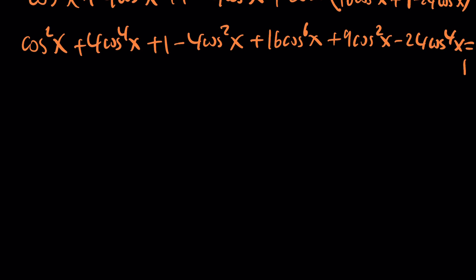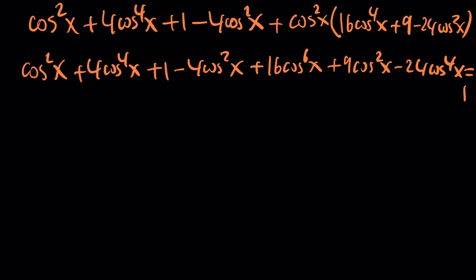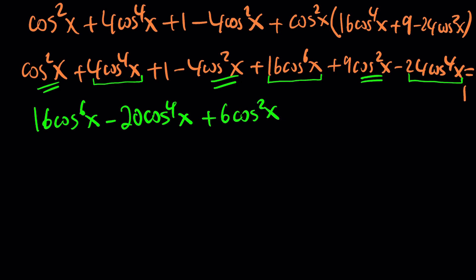Now we have this expression but it can be simplified. Let's go ahead and add like terms. We can start with the highest power. This is 16 cosine to the sixth power. The next one would be the fourth power: we have 4 cosine to the fourth minus 24 cosine to the fourth, that's going to give you minus 20 times cosine to the fourth power of x. And then for cosine squared, we have 1 plus 9 which is 10, minus 4 is 6, so it's plus 6 cosine squared of x. And best of all, 1 cancels out, leaving us with 0. Beautiful.